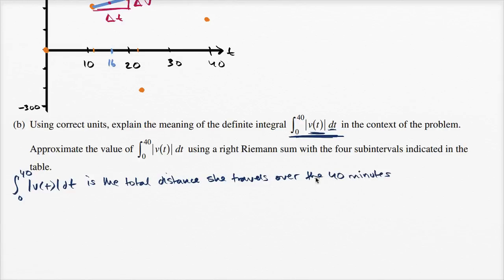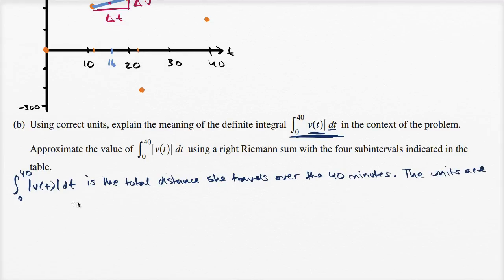So the integral from zero to 40 of the absolute value of v of t dt is the total distance she travels over the 40 minutes. Remember, our unit of time here is in minutes, and the units are meters.